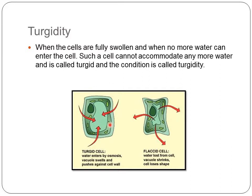The vacuole expands, pushing the cell cytoplasm against the cell wall. Eventually, a condition arises where no more water can enter the cell. Such a condition where the cell cannot accommodate any more water entry by osmosis is called the turgid condition, and the cell is called a turgid cell. This condition is called turgidity. The cells are fully swollen in this state.